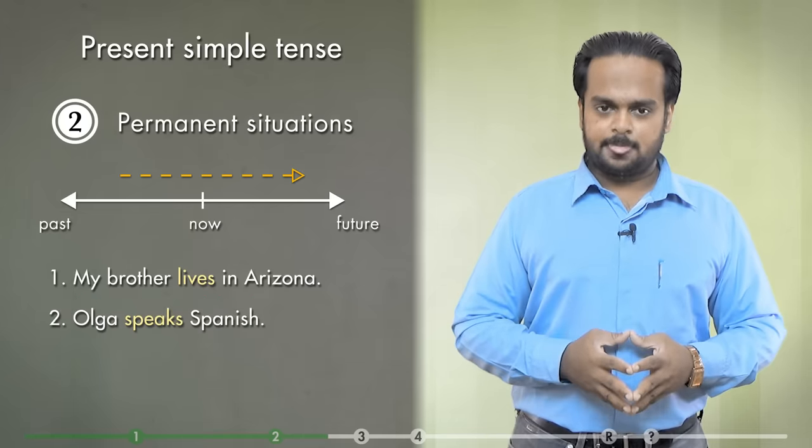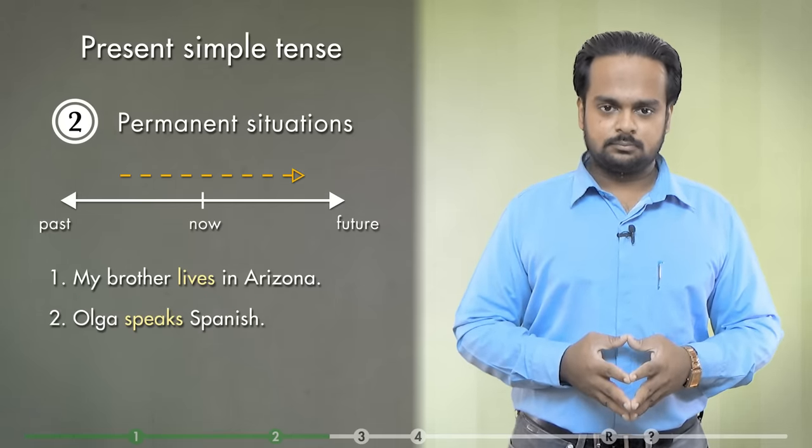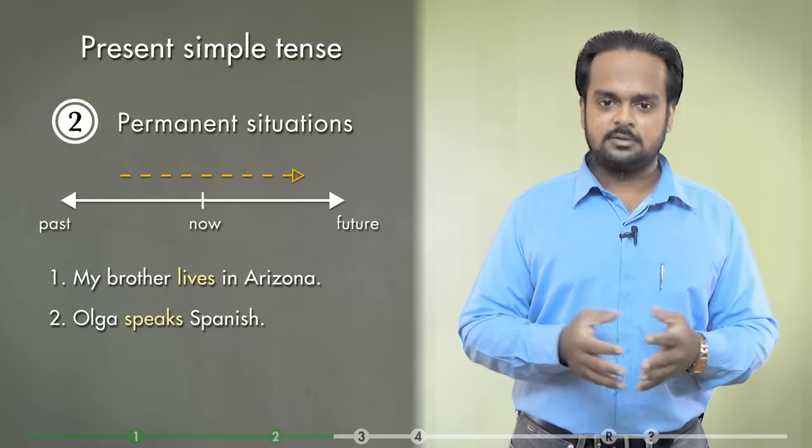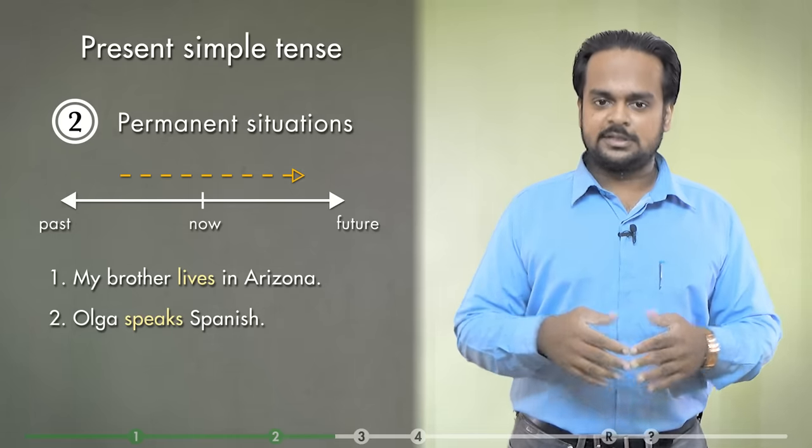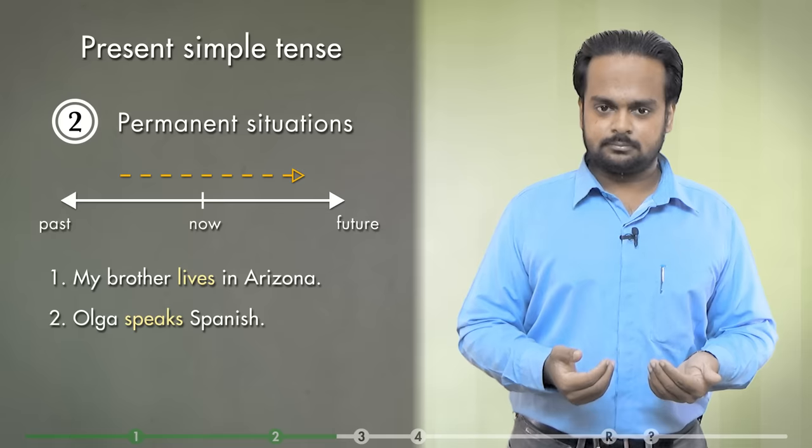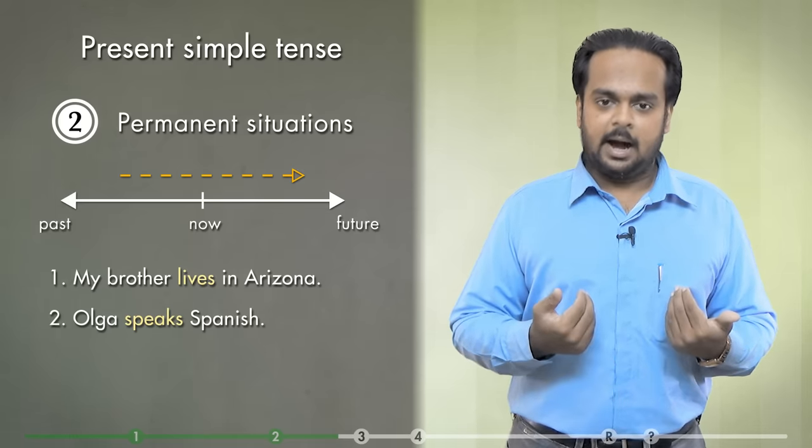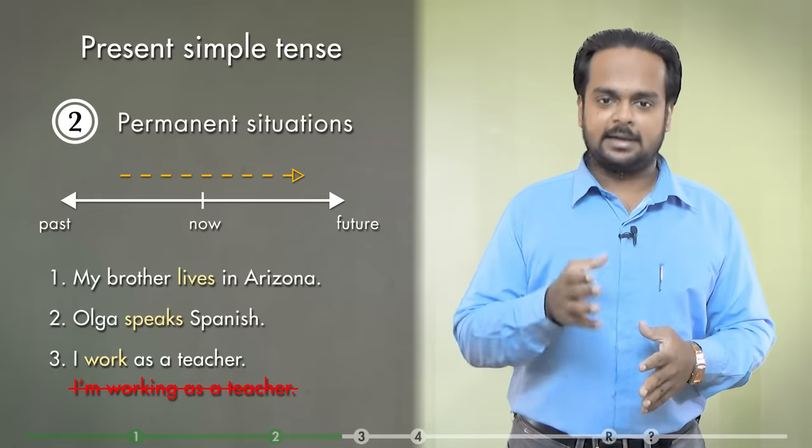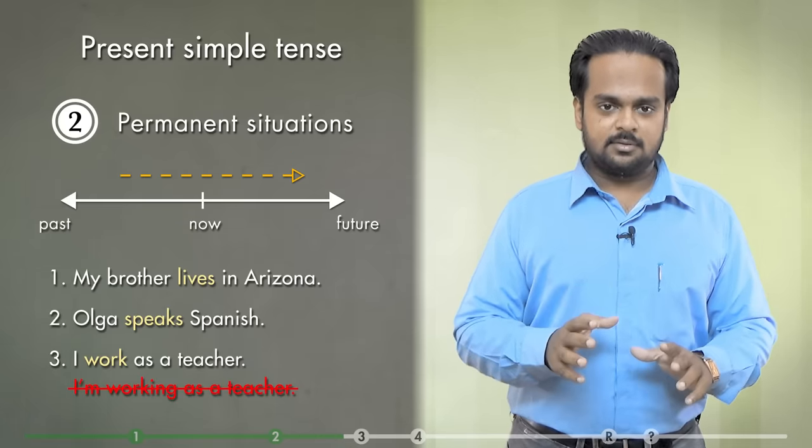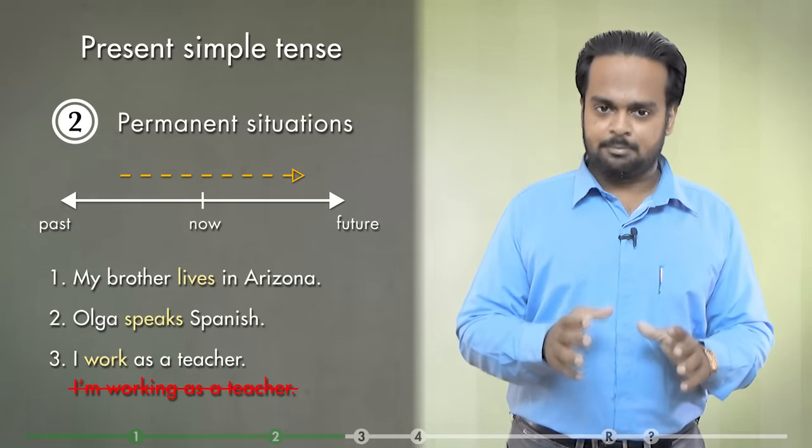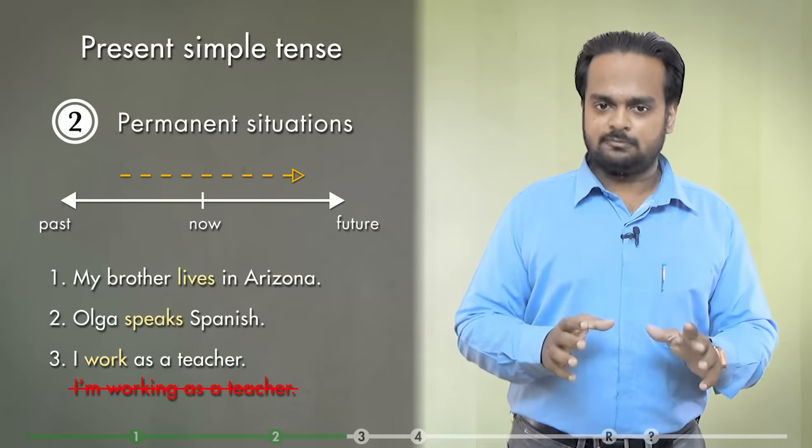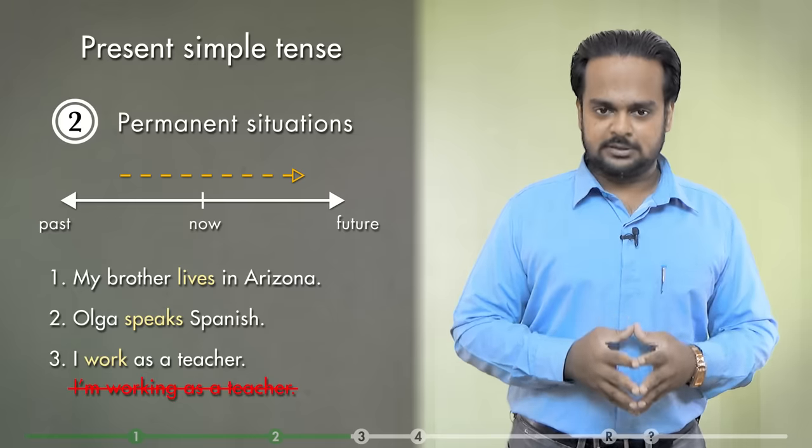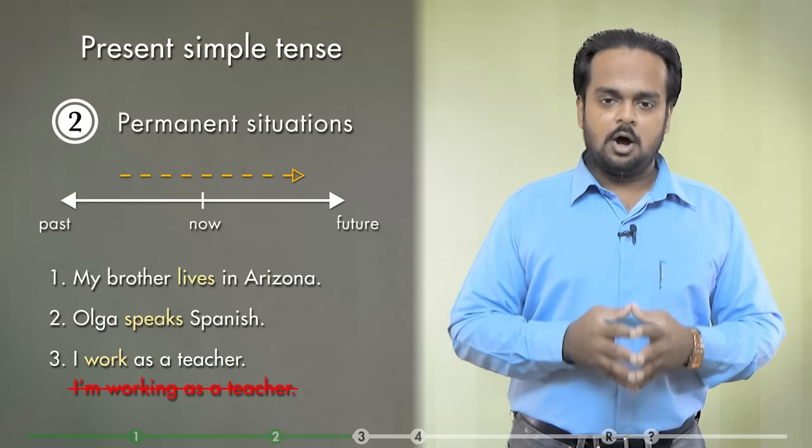For example, I could say, my brother is living with me for a few months. When you hear that, it sounds like it's not permanent – it's temporary. But when you want to talk about a permanent situation, remember to always use the present simple and not the continuous tense. Here's another example – Olga speaks Spanish. Obviously, this is not going to change. Olga is not going to forget Spanish. So again, this is a permanent situation. And talking about myself, I can say, I work as a teacher. It's wrong to say, I'm working as a teacher. If I say that, then it means that my job is temporary. Maybe just for a couple of months or so. But my job is a long-term job. So I use the present simple tense.